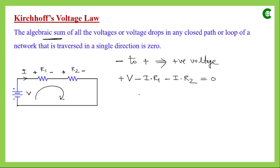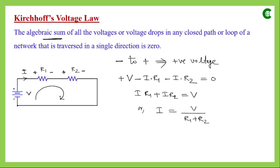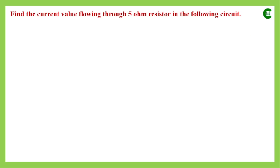The unknown variable in this equation is I. Rearranging, we get I×R1 + I×R2 = V, so I = V / (R1 + R2). That's how we apply KVL in an electrical network. Next, we will simplify an electrical network using KVL.